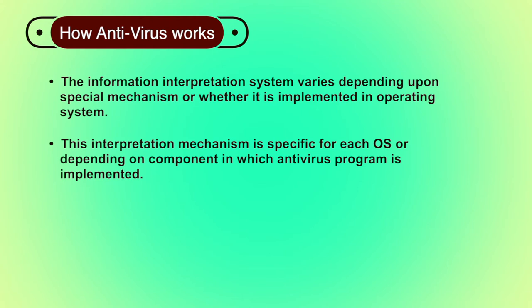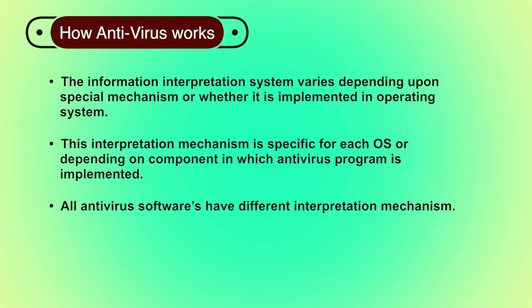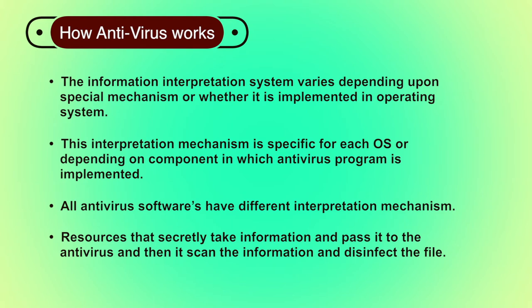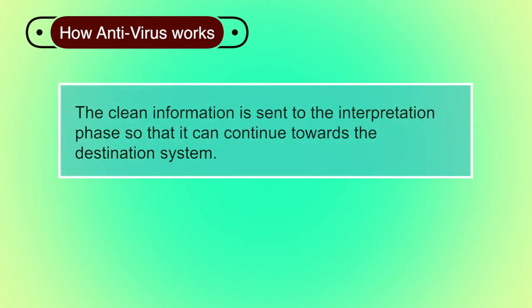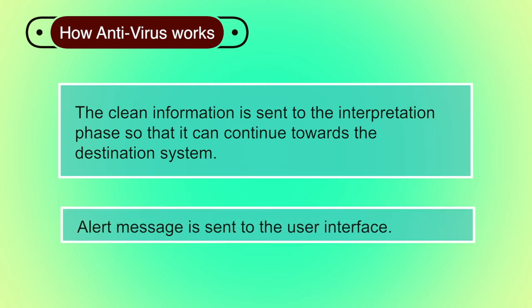All these operations work through the kernel in Windows XP/2000. All antivirus software has different interpretation mechanisms, not only for the OS but also for other applications. Sometimes an interpretation mechanism is not available, so the antivirus uses other resources that secretly take information and pass it for scanning and disinfection. Once the information is scanned, two operations are performed: first, clean information is sent to the interpretation phase to continue towards the destination system; second, an alert message is sent to the user interface. For example, in an antivirus for workstations, the message can be displayed on screen directly, while for a server antivirus, the alert message could be sent to a mailbox.